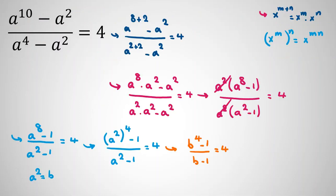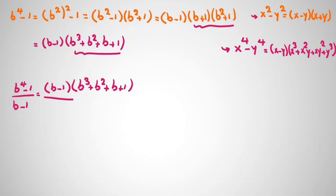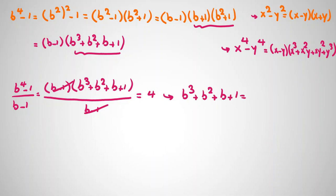So (b^4 - 1) / (b - 1) = (b-1)(b³ + b² + b + 1) / (b - 1) = 4. We cancel the (b-1) terms, giving b³ + b² + b + 1 = 4.